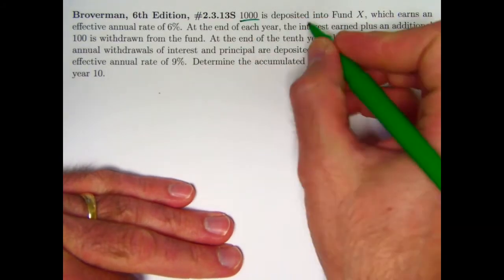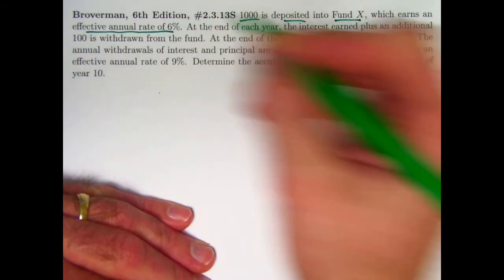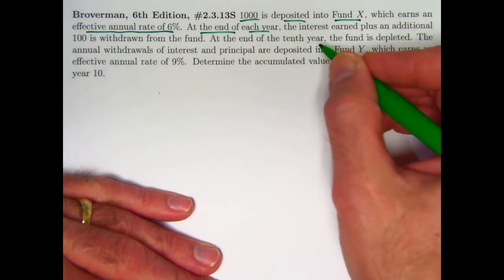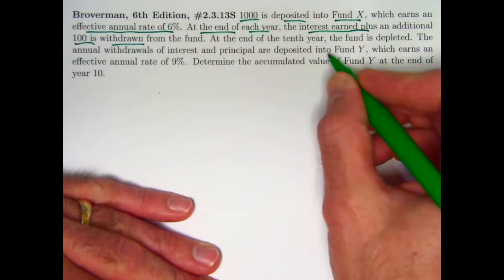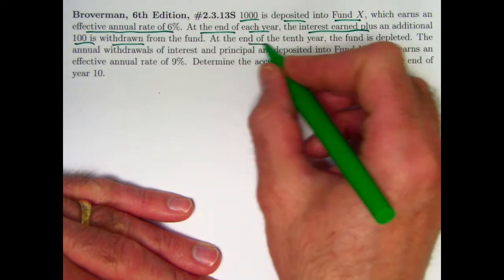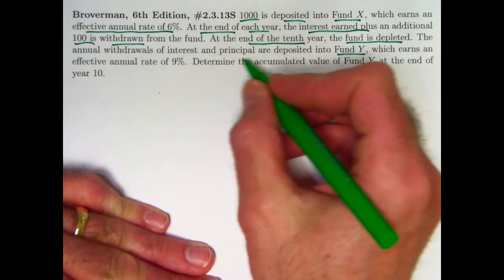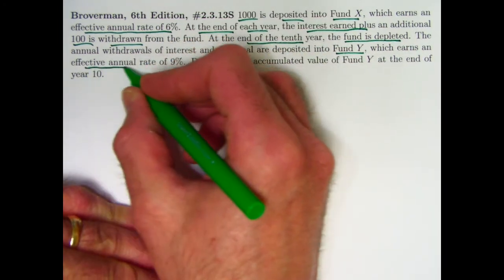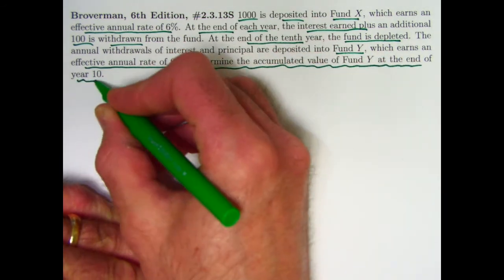We have a thousand that's deposited into fund X. This earns an effective annual interest rate of six percent. At the end of each year we reinvest the interest. The interest earned plus an additional 100 is withdrawn and ultimately reinvested in fund Y. At the end of the 10th year the fund is depleted. The annual withdrawals of interest and principal are deposited into fund Y which earns an effective annual rate of nine percent. The goal is to determine the accumulated or future value of fund Y at the end of year 10.